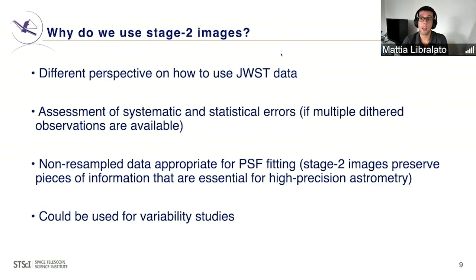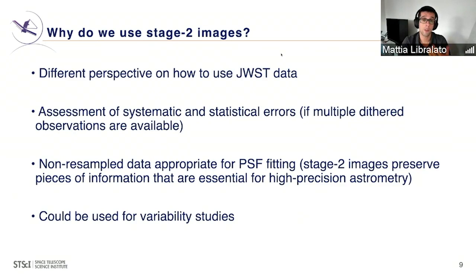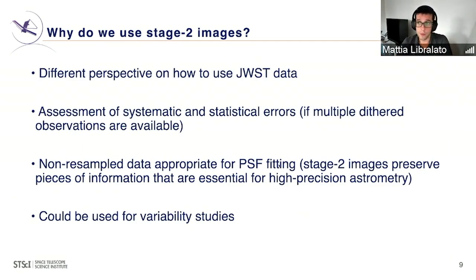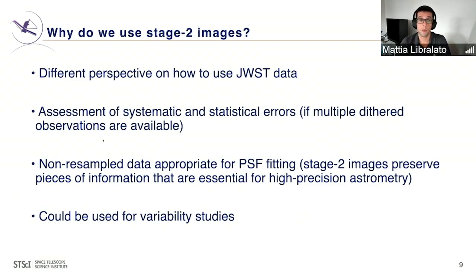Another reason is that if your data was taken with dithering — so you have multiple exposures of your target at different detector positions — creating astrometric and photometric catalogs from the stage two images allows a direct assessment of the systematics affecting your data. You can also compute statistical errors, for example a mean and RMS of a specific quantity, and understand if one of your measurements is an outlier with respect to the others.